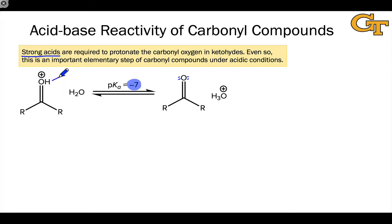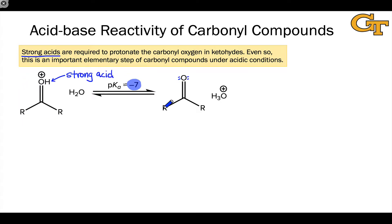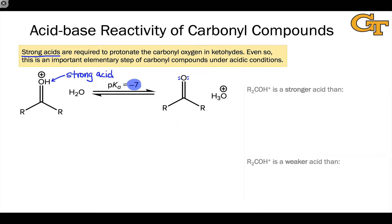For a ketone or aldehyde, a typical pKa value here is about negative 7. Qualitatively, this means that the protonated carbonyl group itself is a very strong acid, on par with something like HCl. In order to generate this structure from a neutral carbonyl group, an acid of comparable or even greater strength is required.